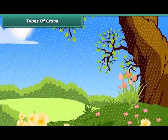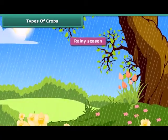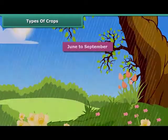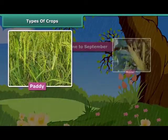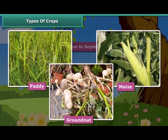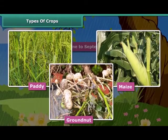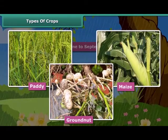Kharif crops are usually sown in the rainy season, generally from June to September. Paddy, maize, groundnut, etc. are some common examples of Kharif crops. To grow crops, various activities are performed, which are known as agricultural practices. Let us know them one by one in detail.